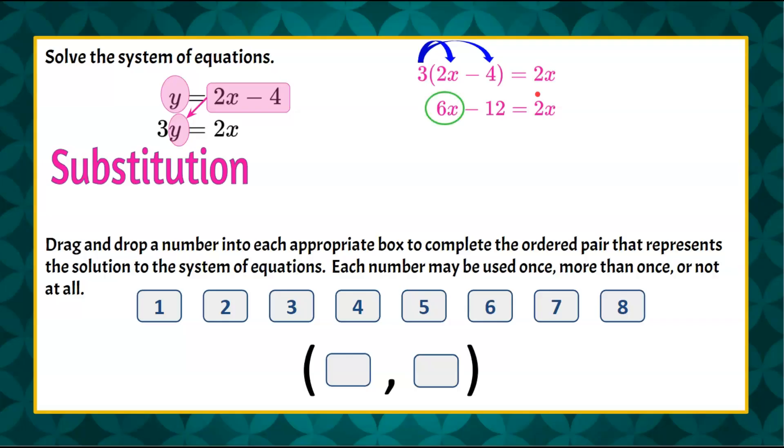Now I see that I have variables on both sides, so I have to collect those like variable terms to one side. Seeing as there is only an x term to the right, we're going to do the inverse to get this 6x to the right side of the equal sign. The inverse, or opposite of 6x, is negative 6x.